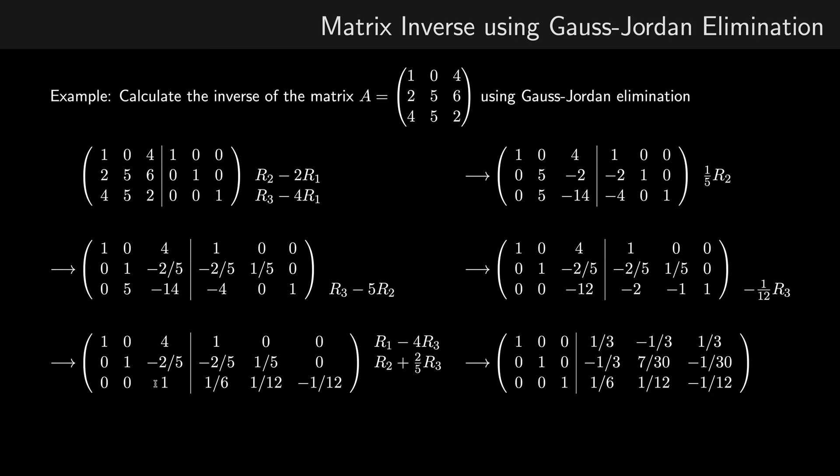In doing so, we end up with our augmented matrix now in reduced row echelon form. We have our identity matrix now on the left side of the partition and we have some other values on the right-hand side.